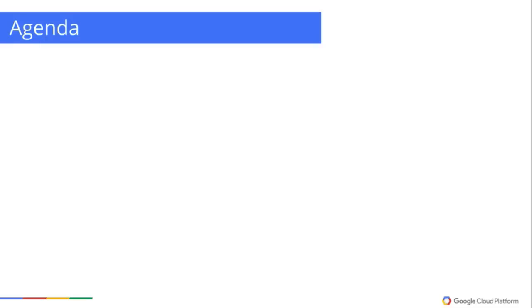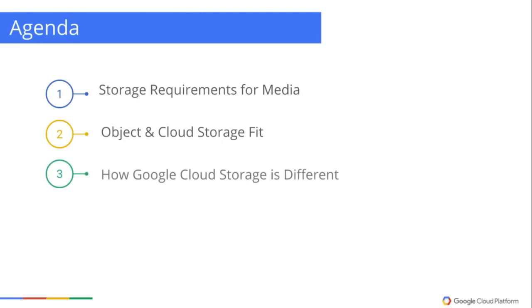Today's agenda will start with Jeff sharing his experiences in dealing with media, ensuring some key requirements for storing and accessing video, images, and audio files. Then I'll introduce object storage and cloud storage, and discuss how they are well suited to media assets. Next, I'll briefly talk a little bit about Google Cloud Storage, and how it's differentiated from other cloud object stores. And we'll finish with a few examples of where Google Cloud Storage is used today.